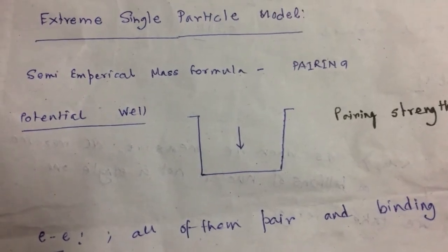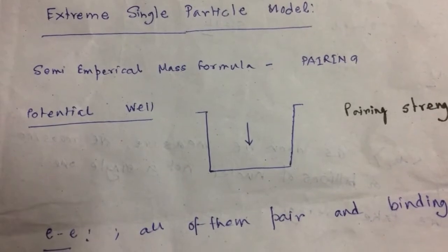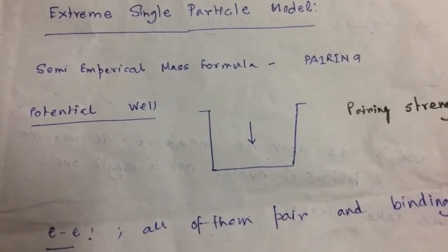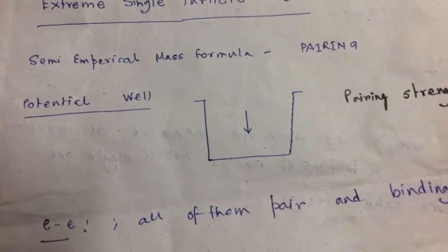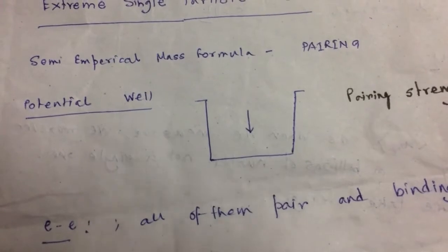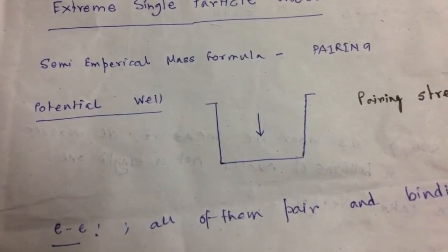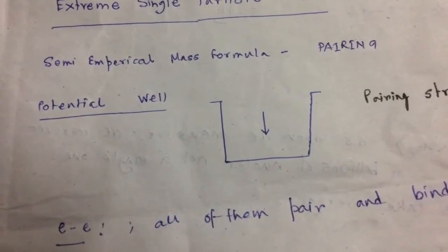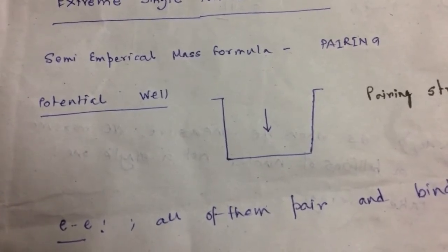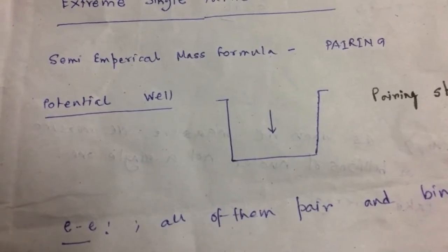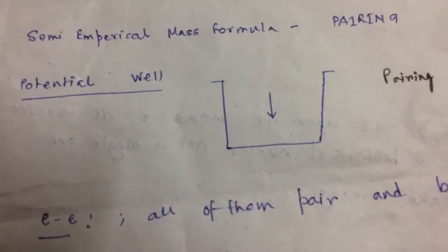So far we have studied the extreme single particle shell model and the semi-empirical mass formula for a nuclear system. In the semi-empirical mass formula we had terms corresponding to the volume term, surface term, Coulomb term, and a pairing term denoted by Delta. That pairing term decides whether the binding energy increases or decreases, and it differs for even-even, even-odd, odd-even, and odd-odd nuclei. So pairing was important in the binding energy of the nucleus.